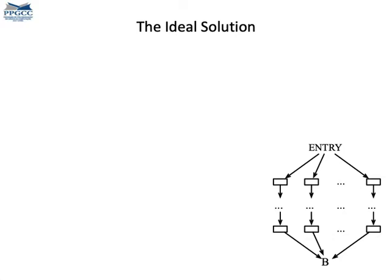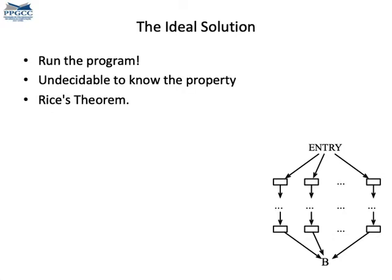But what would be an ideal solution to a data flow analysis? When we run a static analysis, we want to know some properties of a program. The program has many paths, and we want to know if regardless of the path taken, the property will always be true. If we want to know some property of a program, we could simply run it and check if the property occurs. But that's undecidable — from Rice's theorem, we cannot know an interesting property of a program always, because the program may not terminate. So we need to settle for conservative approximations of the program's behavior.